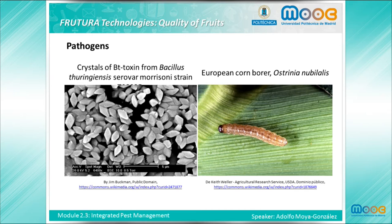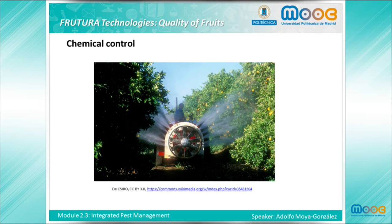During sporulation, many Bt strains produce crystal proteins that have insecticidal action. Spores and crystalline insecticidal proteins produced by Bacillus thuringiensis have been used to control insect pests since the 1920s and are often applied as liquid sprays. They are now used as specific insecticides under trade names such as Dipel and Thuricide.